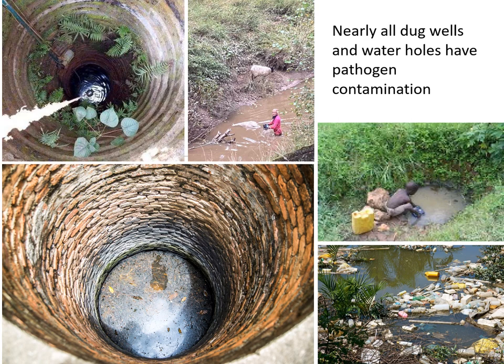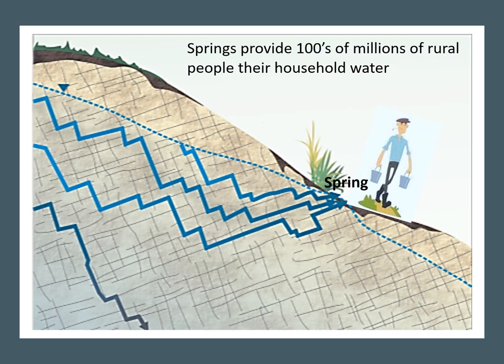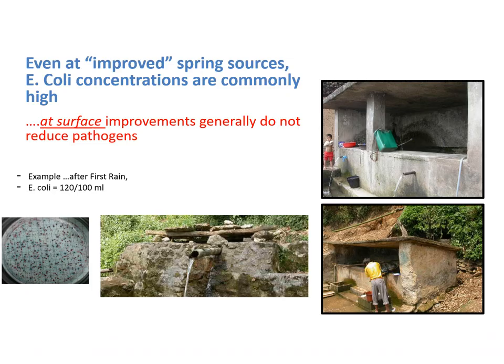Nearly all dug wells and water holes have pathogen contamination. Springs provide hundreds of millions of rural people with their household water. Even at improved spring sources, E. coli concentrations are commonly high. That's because the improvements don't prevent contamination from animals and human waste from getting into the shallow subsurface and running into the well.